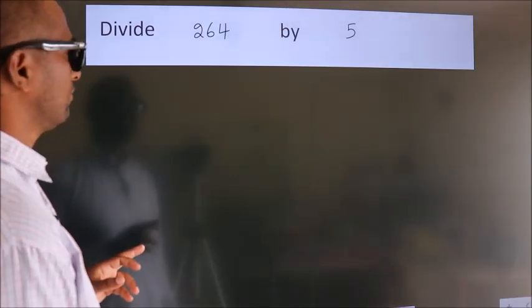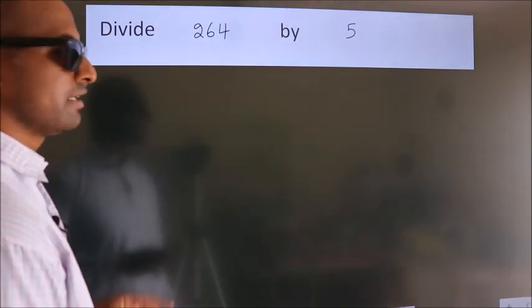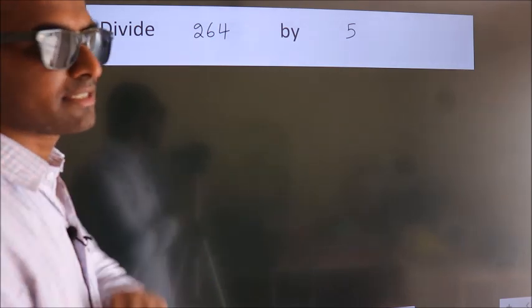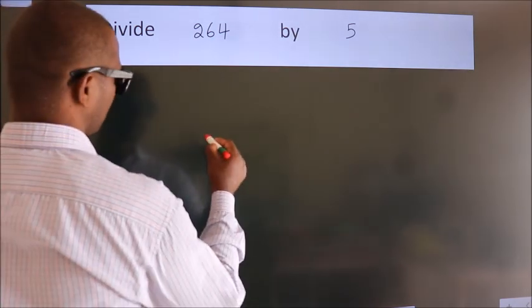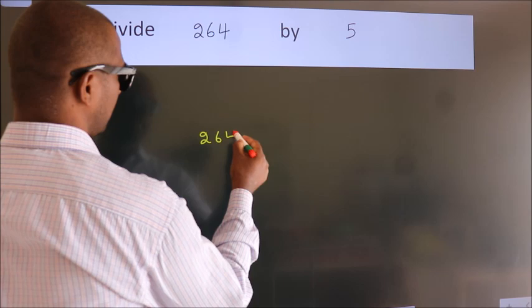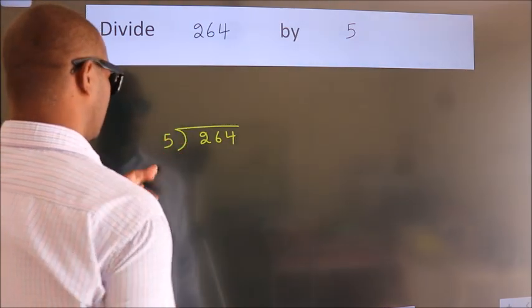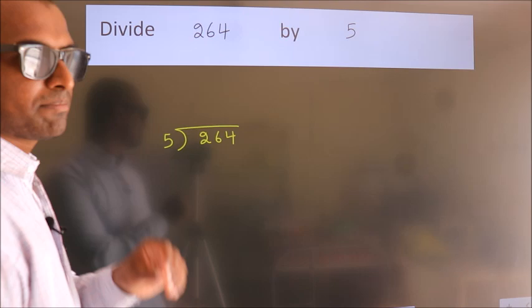Divide 264 by 5. To do this division, we should frame it in this way: 264 here, 5 here. This is your step 1.